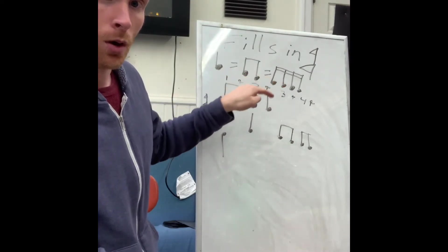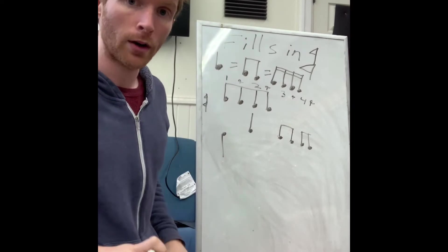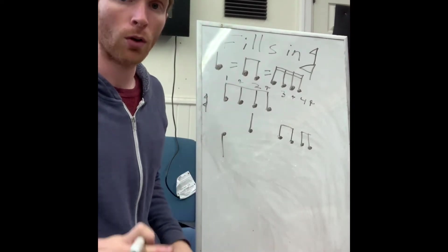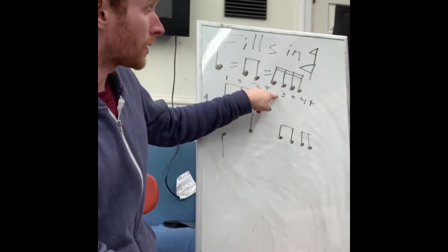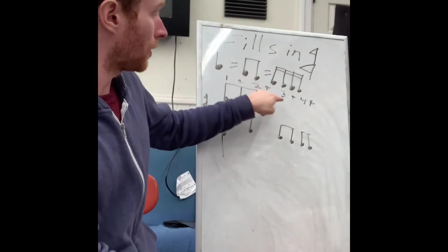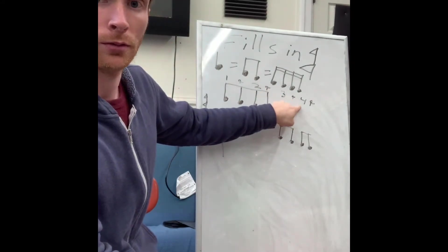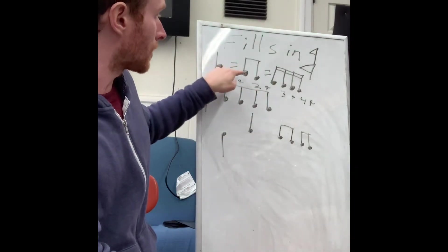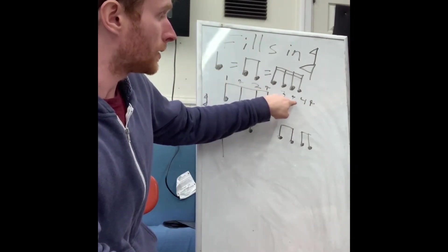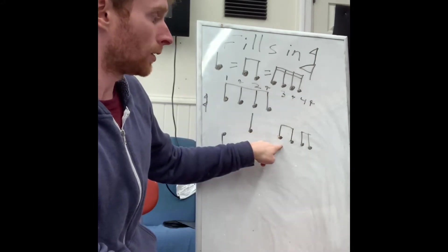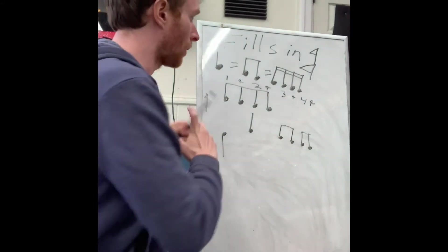So if I wanted to do our basic beat, right — the one and two and three and four — I can go one and two and, and if I want to stop on three, I'll put a quarter note on three and then a quarter note on four. Now if I want to do eighth notes, I can go one and two and three and four and.